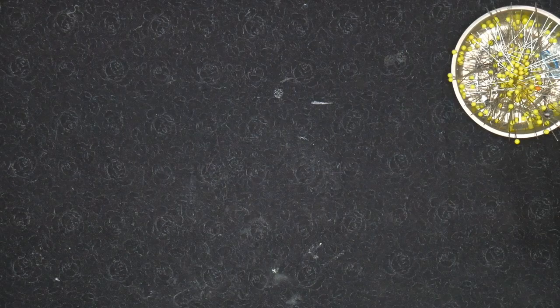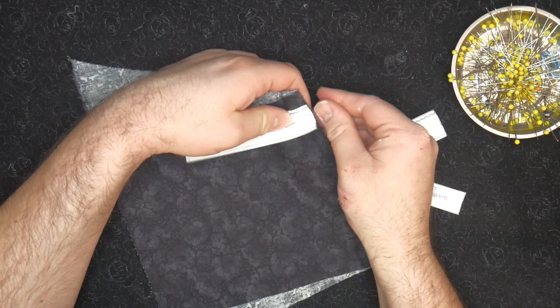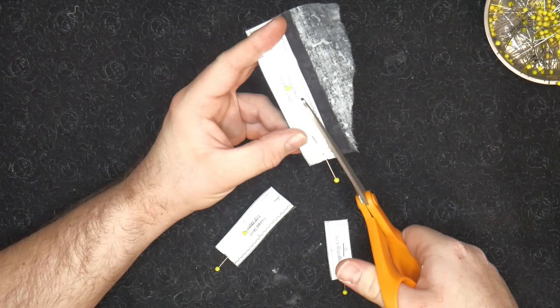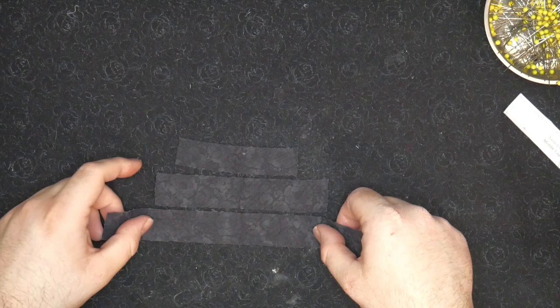This pattern also includes a tiered ruffle skirt to go under the dress. To make it, I use the same fabric as the overdress and a ton of lace ribbon. For doll clothes, it's best to seal the edges with fabric tack so they don't unravel.